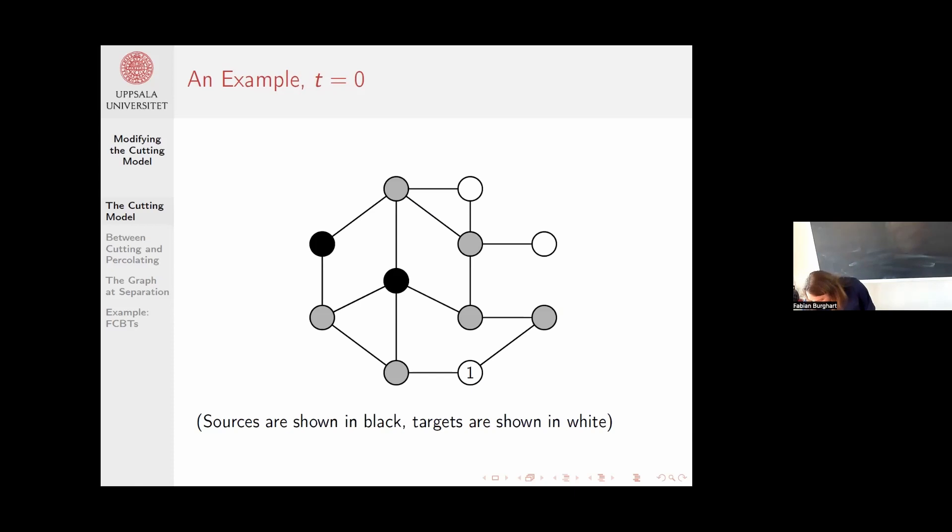At time one, we have simply removed this vertex. At time two, we select another vertex at random. This time you can see that the target to the right of this chosen vertex will also be removed, because it has no connection to any of the black sources. The third cut works similarly. The fourth cut hits the source.